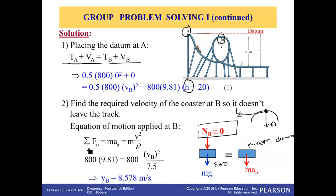And then we apply this equation of motion: sum of forces in normal direction equals mass times normal acceleration, which is an = v²/ρ. The sum of forces in normal direction is only mg because we assume that the normal force is zero. So it's equal to 800(vB)²/7.5, which is the radius of curvature. So we get the velocity at B is 8.578 m/s.